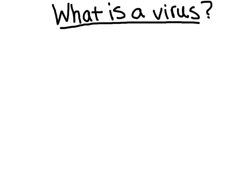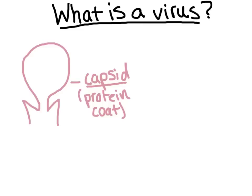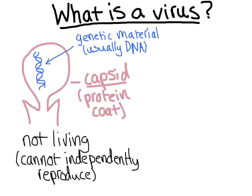Their outer casing, made of protein, is called a capsid. And then inside they contain their nucleic acid of choice, typically DNA. Viruses cannot produce on their own, and so they are not considered living by biologists. But they can generate copies by infecting other cells.